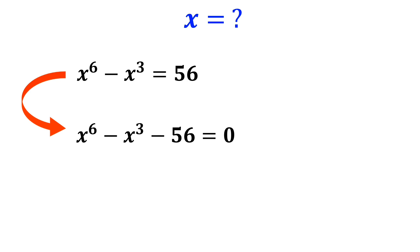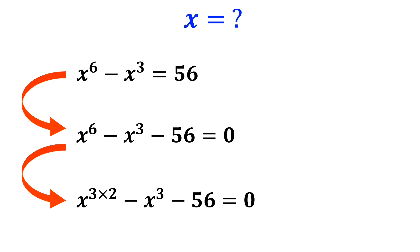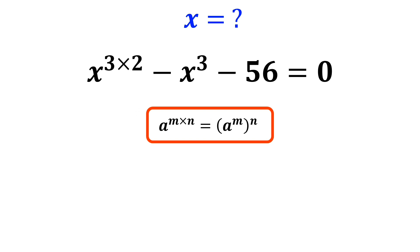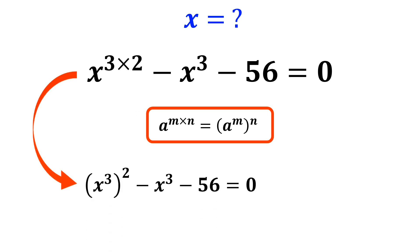Now we write x to the power of 6 as a power of 3, so it becomes x to the power of 3 times 2 minus x to the power of 3 minus 56 equals 0. According to the rules of exponents, a to the power of m times n equals a to the power of m to the power of n. So we can write this as x to the power of 3 to the power of 2 minus x to the power of 3 minus 56 equals 0.